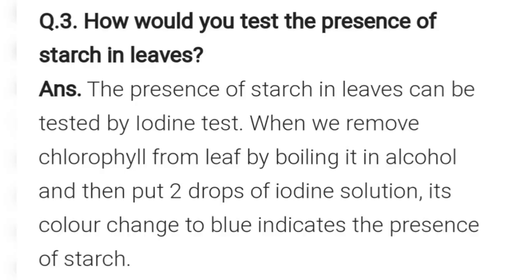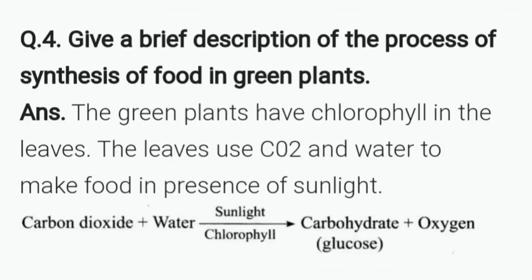Question three: how would you test the presence of starch in leaves? The presence of starch in leaves can be tested by the iodine test. When we remove chlorophyll from a leaf by boiling it in alcohol and then put two drops of iodine solution, its color changes to blue, which indicates the presence of starch.